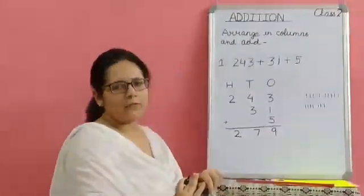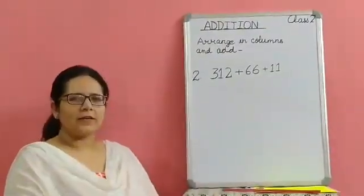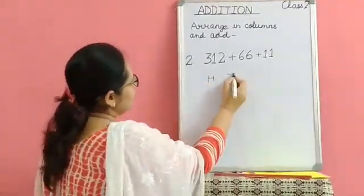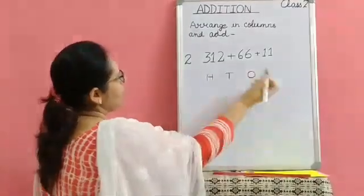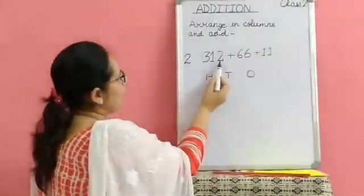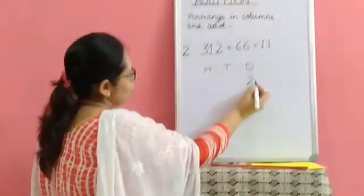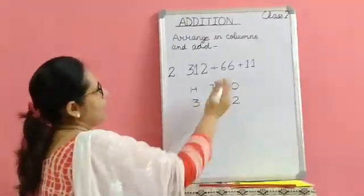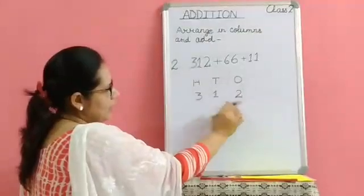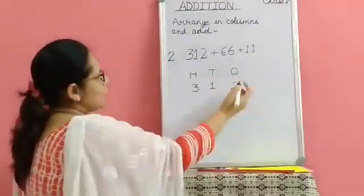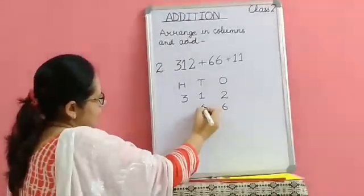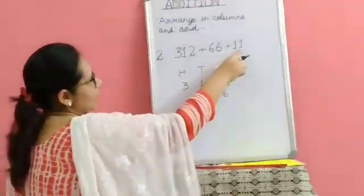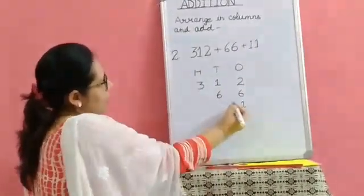Now we will take another example. Children, we will again write the columns: H, T, and O. The first number is a three-digit number — how many ones? Two. How many tens? One. How many hundreds? Three. The two-digit number has ones and tens but no hundreds, so six here in ones and six here in tens. The third number is also a two-digit number — how many ones? One. How many tens? One.